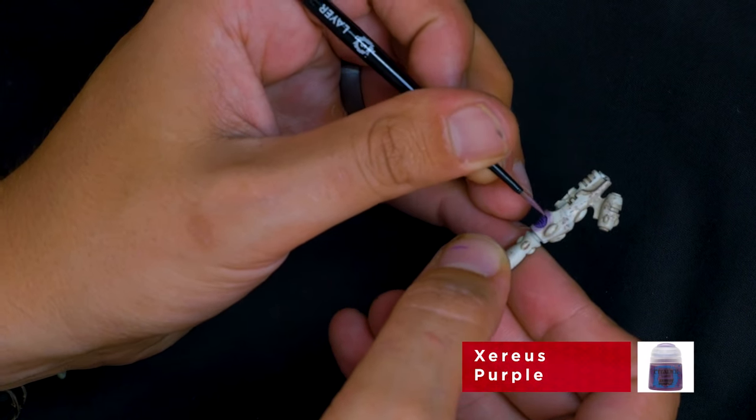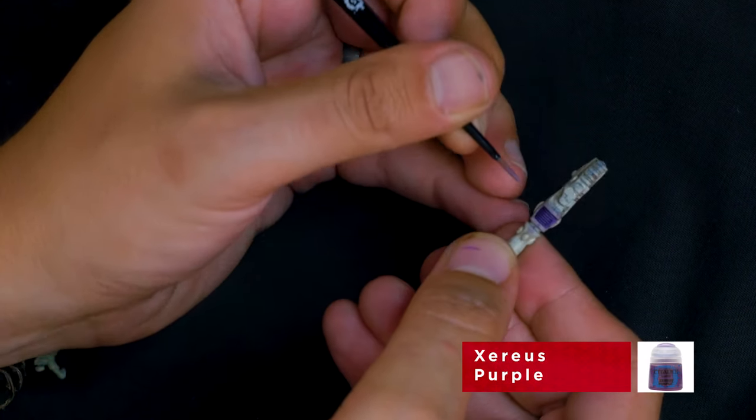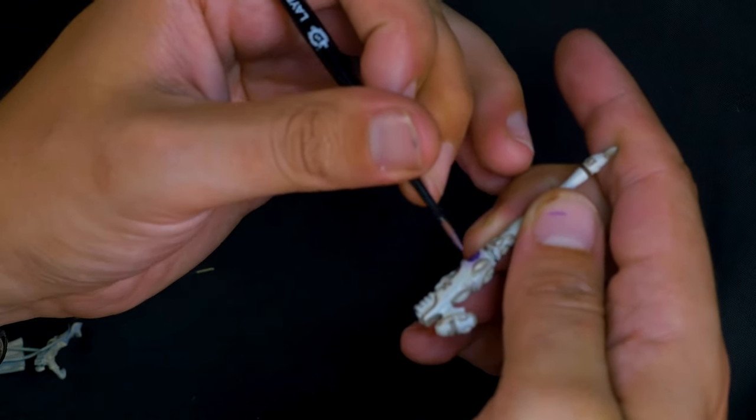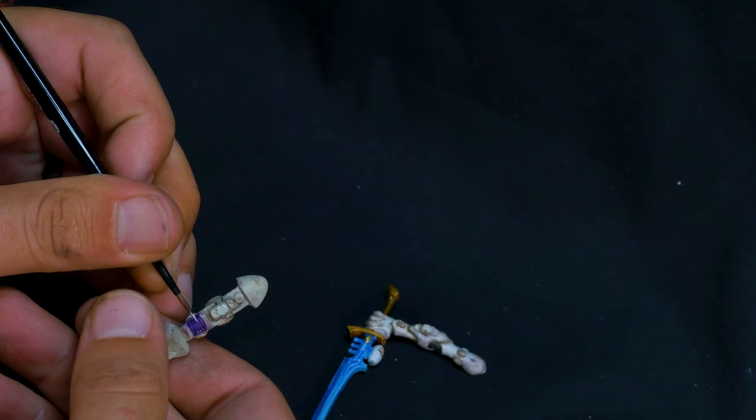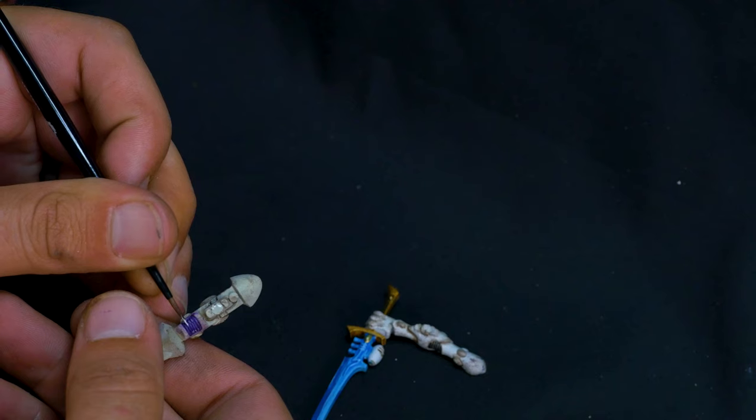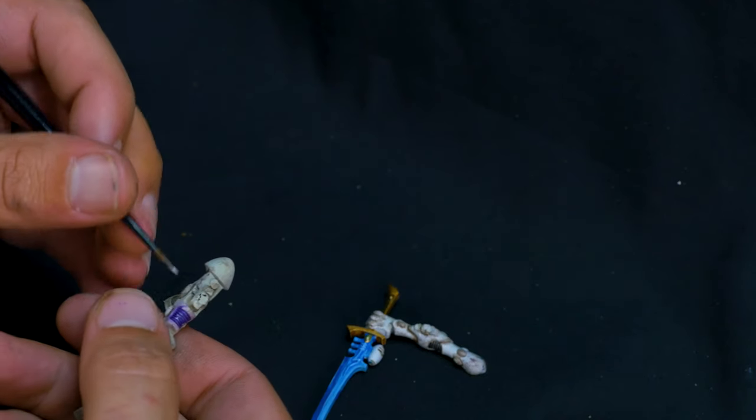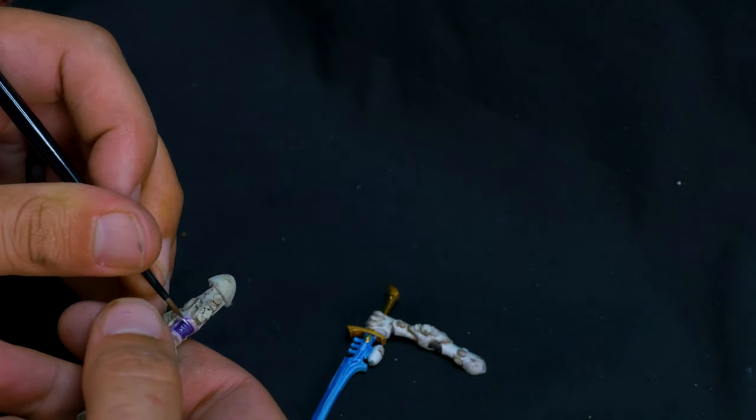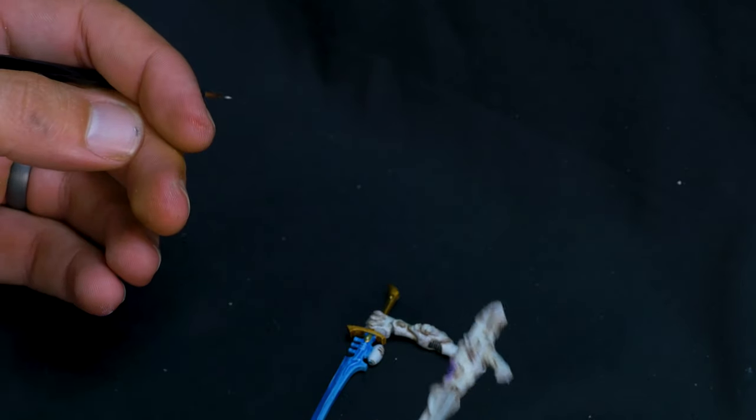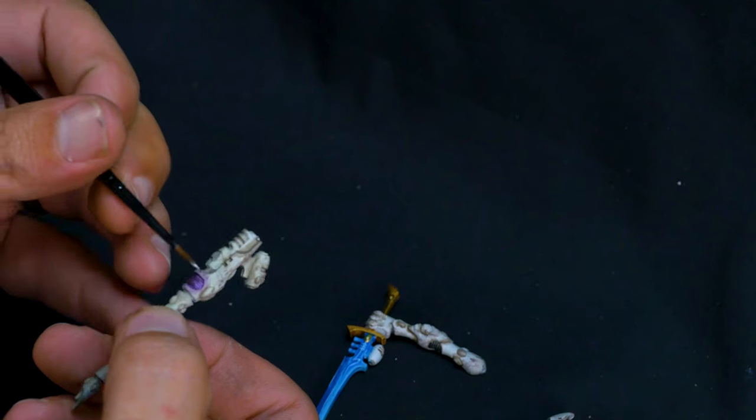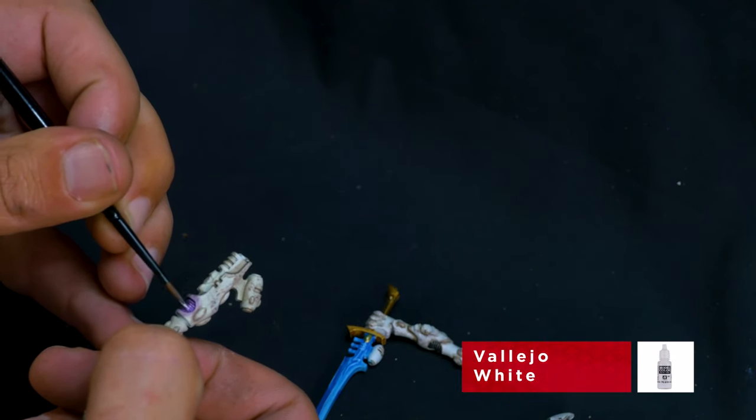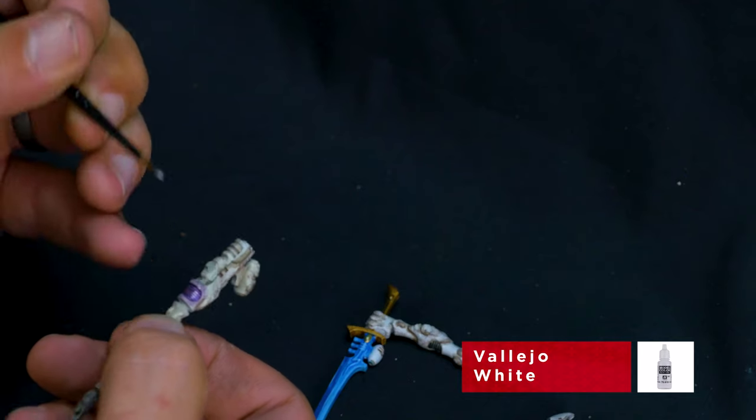Once you've done that set, we're going to go in with a slightly lighter purple and start picking out all the edges and the individual coils. Don't be afraid to go back and forth with your plasma. There's no harm in going back to your base coat and starting again. Plasma is one of these tricky things to do to make it look realistic, and there's no real one way to do it. Once you've done that lighter purple, I'm going to come straight in with white and just do a nice little single line across the top. It's important to leave the gaps between the coils as dark as possible.